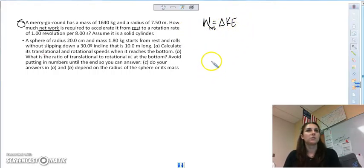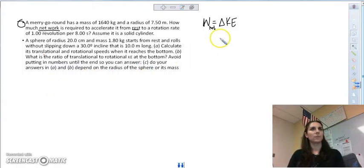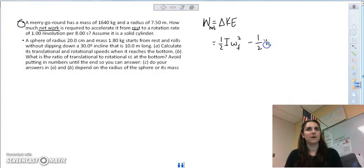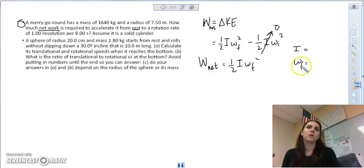If I rewrite this, it's going to be one half I omega squared final minus one half I omega initial squared. But the cool thing is this starts from rest, so this whole thing goes away. So the net work is going to equal to one half moment of inertia omega final squared. So our trick is to figure out what our I is because that's going to be dependent on the shape and what are my final angular speed.